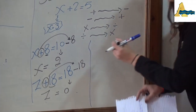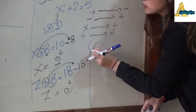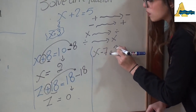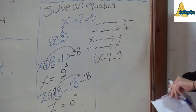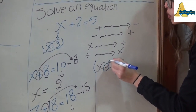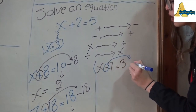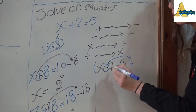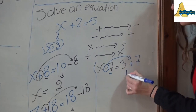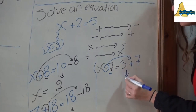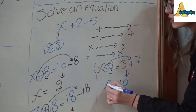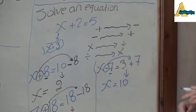If I have x - 7 = 3: as we said, the minus is going to go to plus. Plus 7: 3 + 7 = 10. That means x = 10.